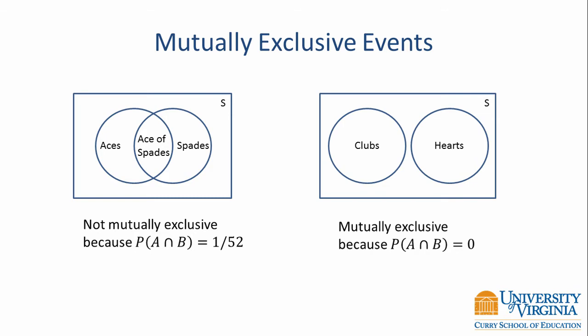By contrast, we could either be interested in clubs or hearts. There's no card that's both a club and a heart. Therefore, clubs and hearts are mutually exclusive events because the probability of observing them both on a single card is equal to zero.